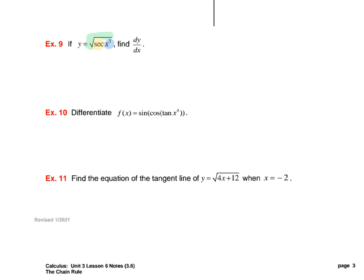So for this problem, we're going to find dy/dx. That means find y prime — dy/dx is equal to, first the power rule. I'm going to think of this root as a one-half power. So first we're going to do the power rule, and we have one-half, and then everything to the negative one-half. Remember, all of this stuff inside there, we will be copying the secant of x cubed. Now we're done with the root, and now we're moving on to the secant.